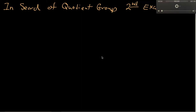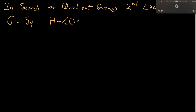In this video, we're going to look for another quotient group. We're going to let our big group be S4, and we're going to let H be a cyclic subgroup generated by the permutation 1→2→4. The very first thing we want to do is find all of the elements of H.